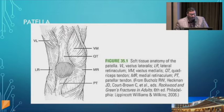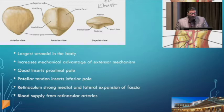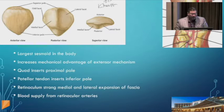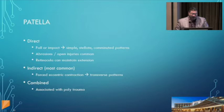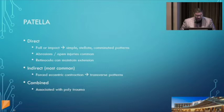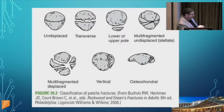The patella is the largest sesamoid in the body and increases the mechanical advantage of the extensor mechanism. The quadriceps inserts to the proximal pole, the patellar tendon inserts onto the inferior pole, with strong soft tissue on either side. Patella fractures occur in two ways: most commonly from indirect force — slipping and falling with forceful quadriceps contraction — producing a transverse pattern; or from direct blows such as a knee against a dashboard, producing multifragmentary or comminuted patterns.